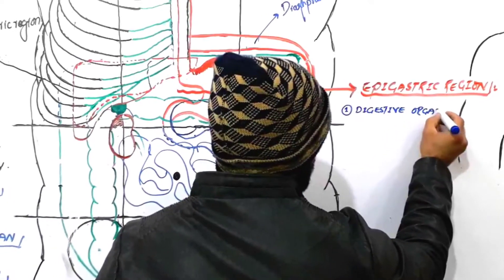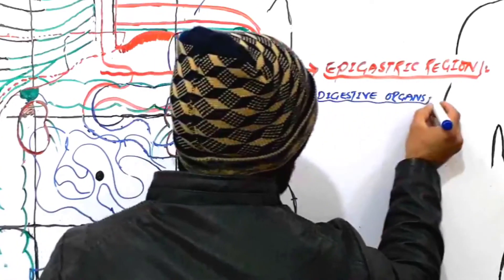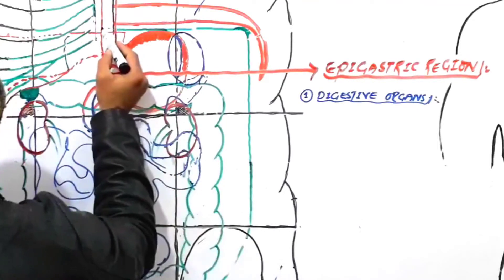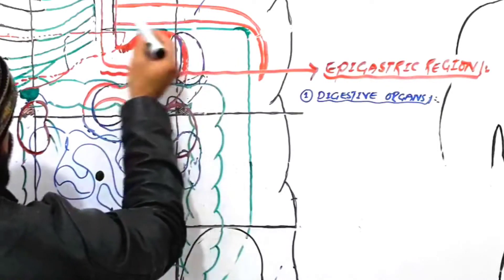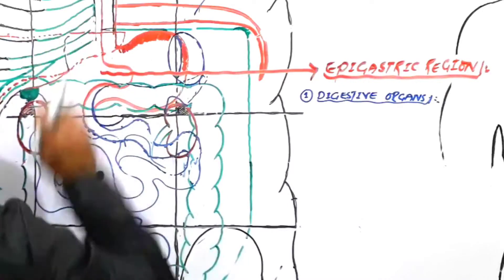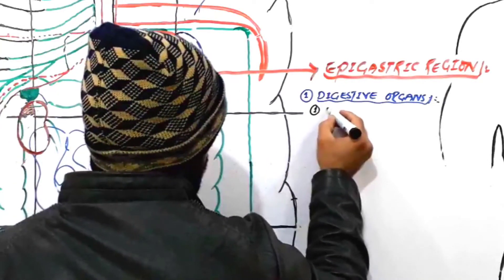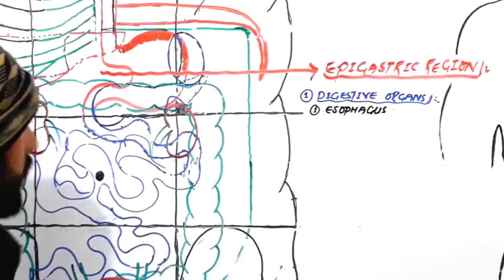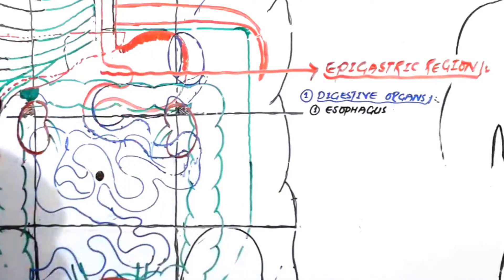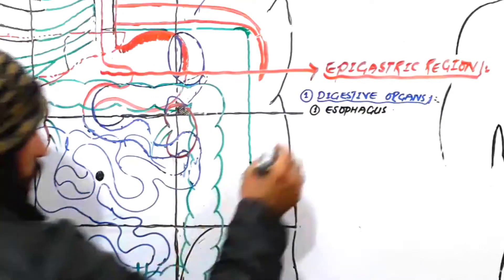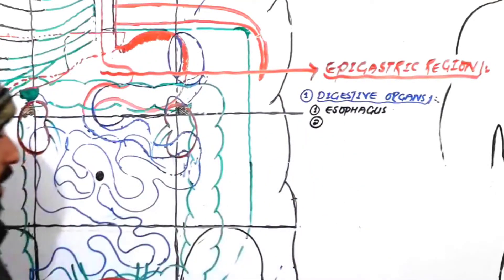What digestive organs are found in your epigastric region? First, look — this is our esophagus, and this esophagus crosses the diaphragm and then enters the abdominal cavity. So the esophagus is present in the epigastric region. Not all of the esophagus — about seventy percent of the esophagus lies in the thoracic cavity, so only the lower part of the esophagus is present in the epigastric region. It plays its role not directly in digestion but it is a tube of the digestive system.